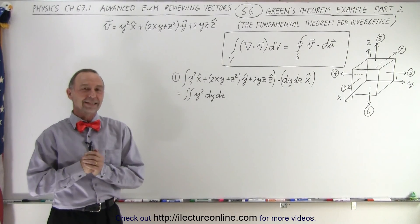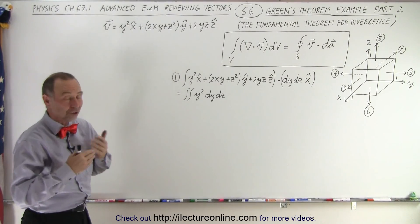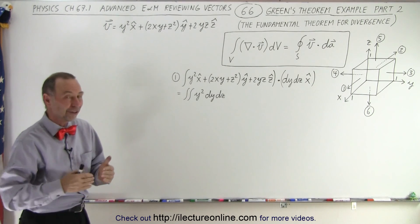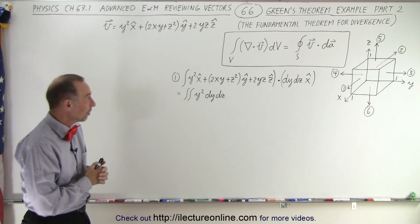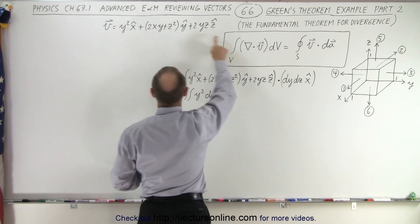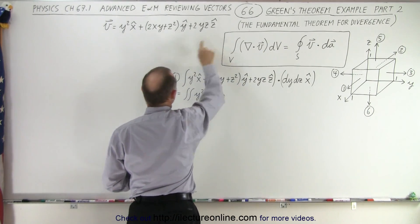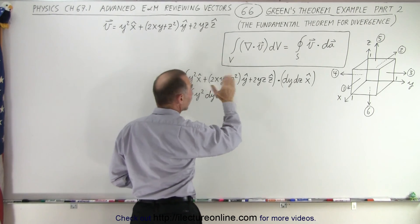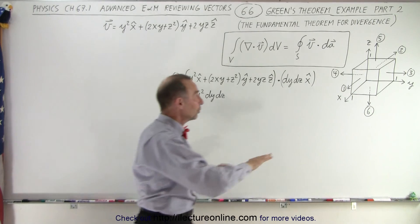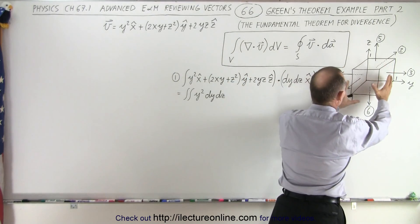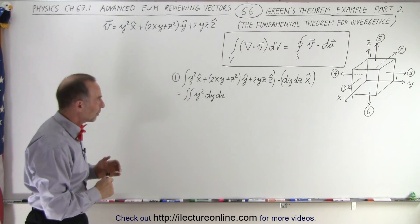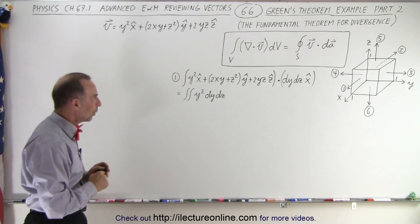Welcome to ElectronLine. In the previous video we started with the attempt to show that Green's theorem actually works — the fundamental theorem for divergence — by showing that the left side, where the vector field we're considering is defined as such, equals 2. Now we're going to show that the right side, integrating across all six surfaces of this cube, gives us this very same result. All of that should add up to 2 as well.